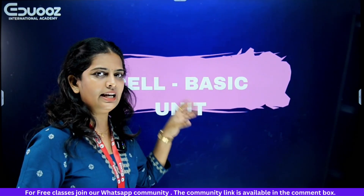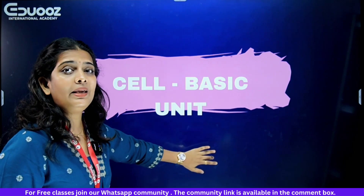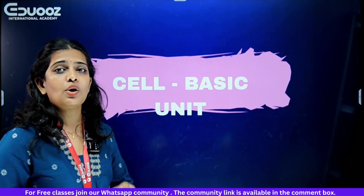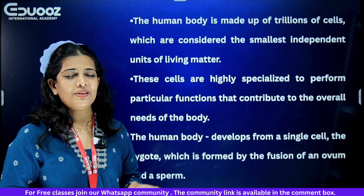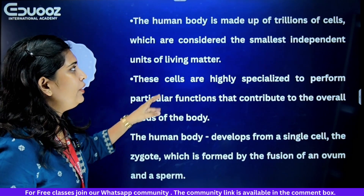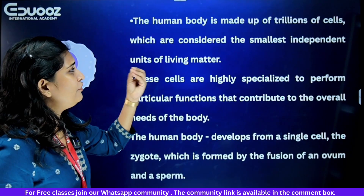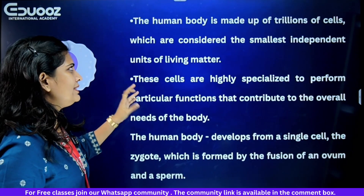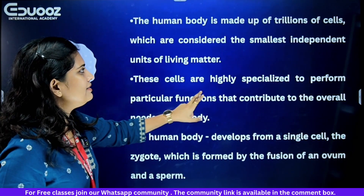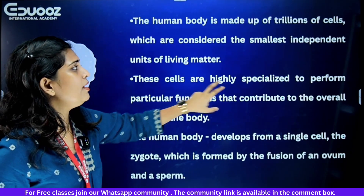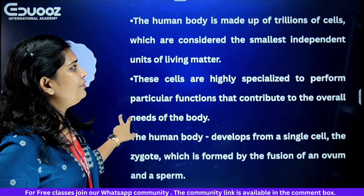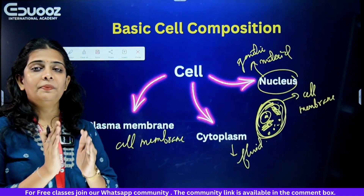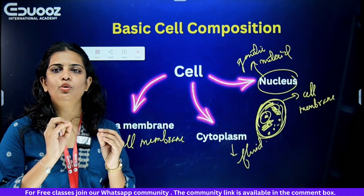Our basic unit of life is the cell. The human body is made up of trillions of cells, which are considered the smallest independent units of living matter. We can take the cell as the basic unit.